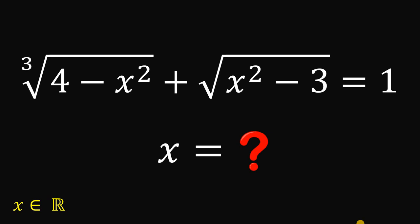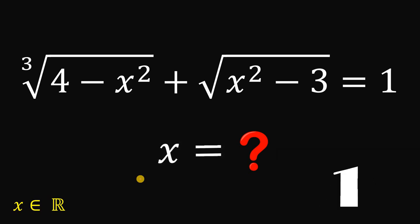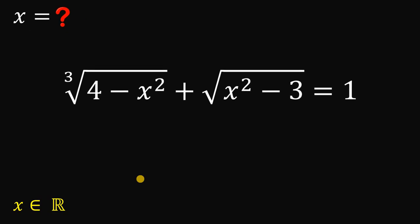Can you solve this hard algebra challenge? Given that cube root of (4 minus x squared) plus square root of (x squared minus 3) equals 1, our goal is to solve for the real value of x that satisfies this equation. You can pause this video to give this a try. By the way, this algebra challenge appears on an exam and is said to be the hardest item on that exam.